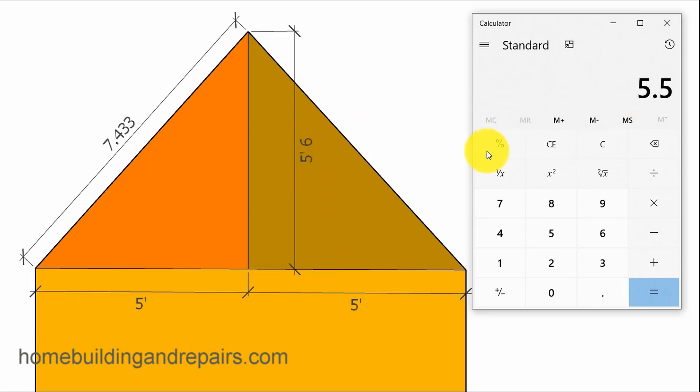So, 5.5. We have our measurement here. We need to square it. 30.25. And then we are going to add that to 25 for the square of 5 here. And then we're simply going to take the square root of that. 7.43. Now, I want to show you something here. We know this is 7 feet. But 0.433.